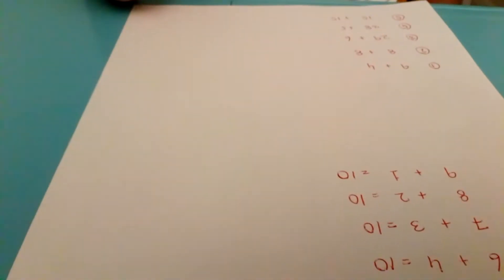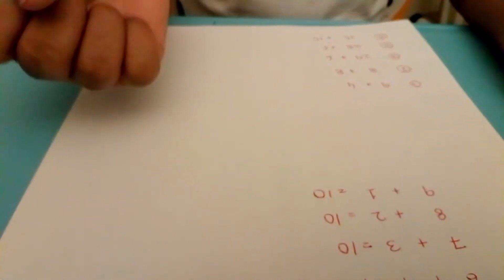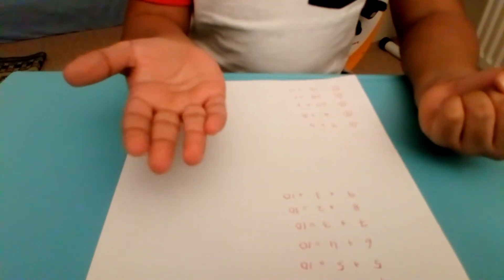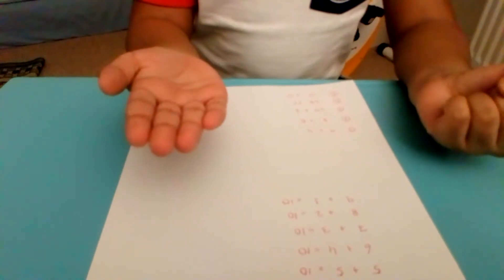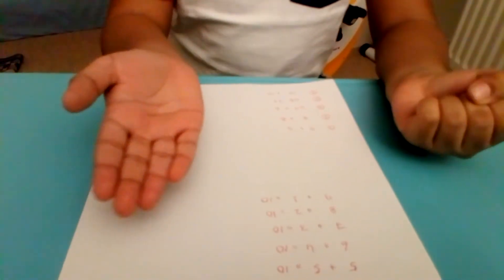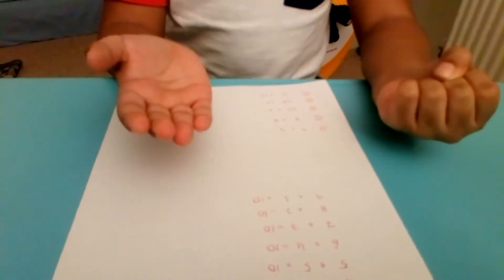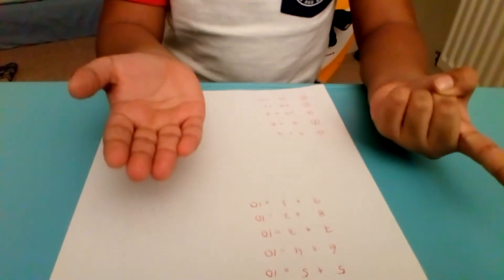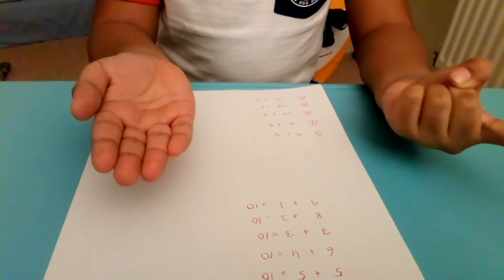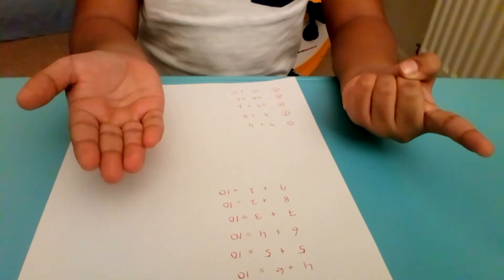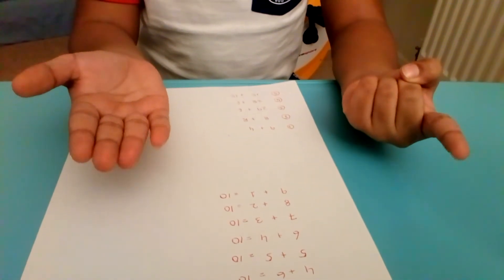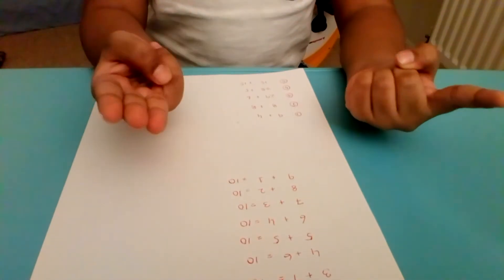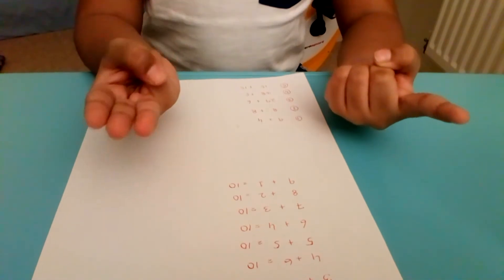Now let's do some questions. So 9 plus 4. We don't have any more fingers for the 4, so we add 1 ten, and then after that we minus the friend of 4, which is 6. And the answer is 13.